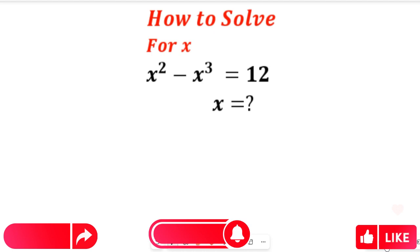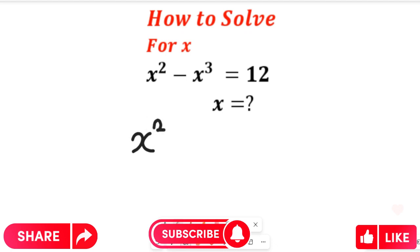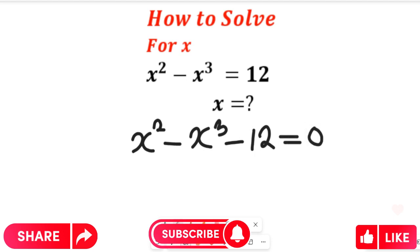Now to solve this question, let's get started. All we need to do is take 12 that is on the left hand side and bring it to the right hand side. We are going to apply a logic which will make us solve this the fastest and quickest way possible. To solve this expression, we'll have x squared minus x cubed, and if we subtract 12 from both sides, we get 12 minus 12, so the right hand side will be equal to zero.